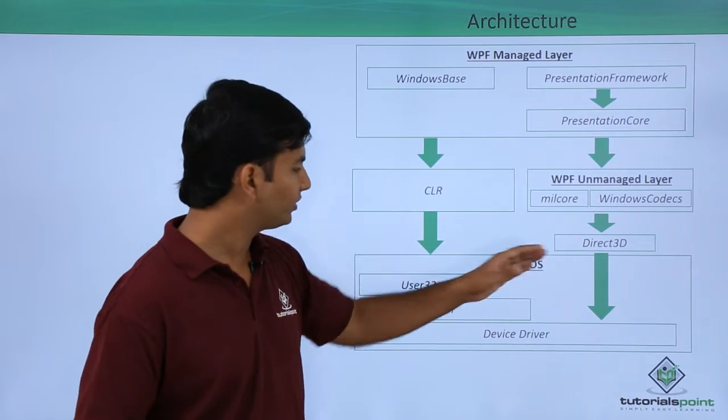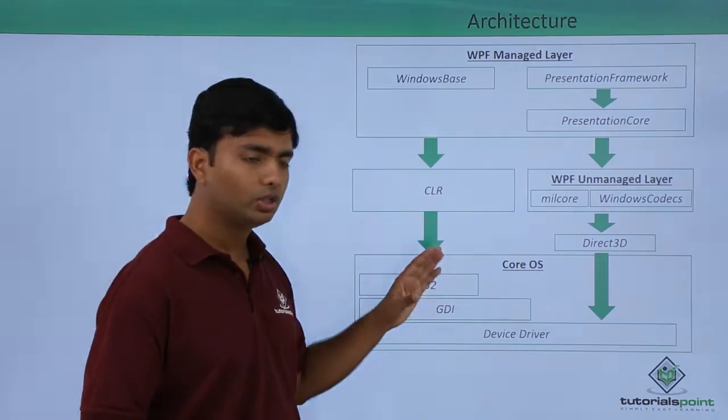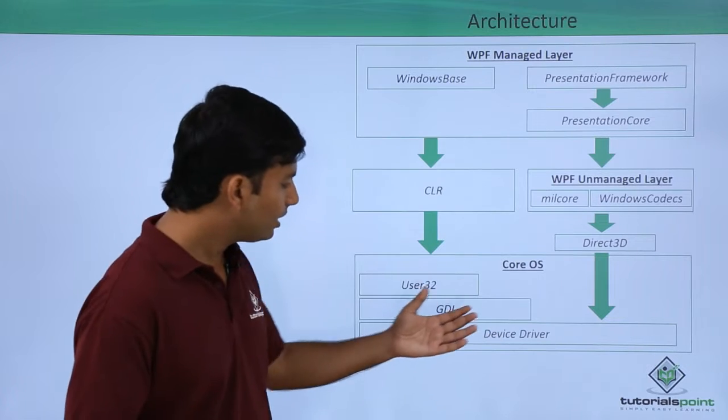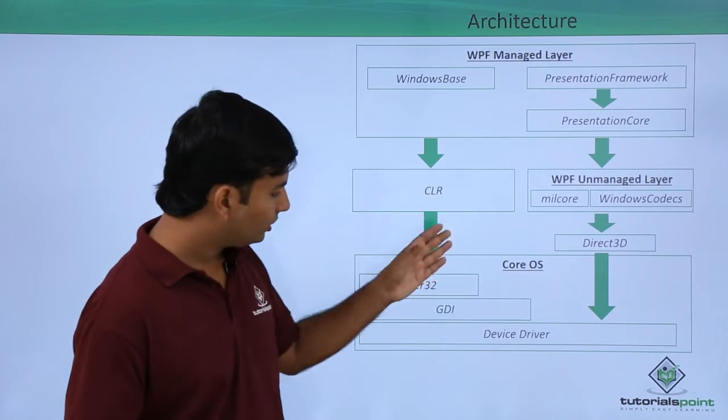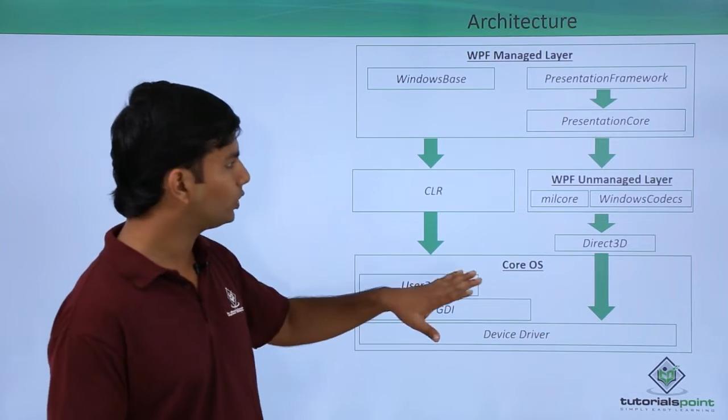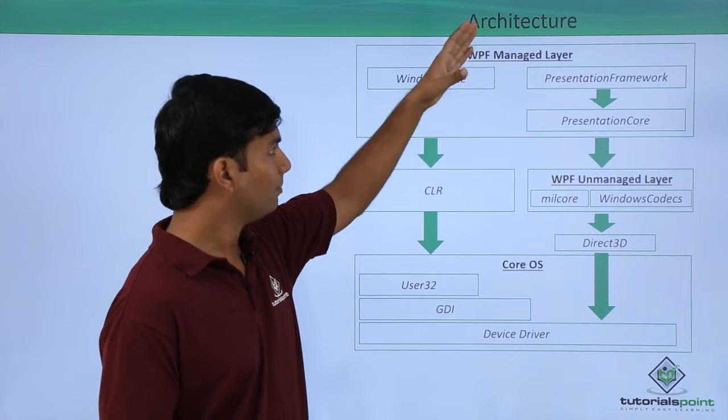After that comes your system, the Windows system in which we are working. The Direct3D in core operating system includes User32, GDI (Graphic Device Interface), and Device Driver. These three things are closely related to the operating system, but here we will stick to the WPF layers.